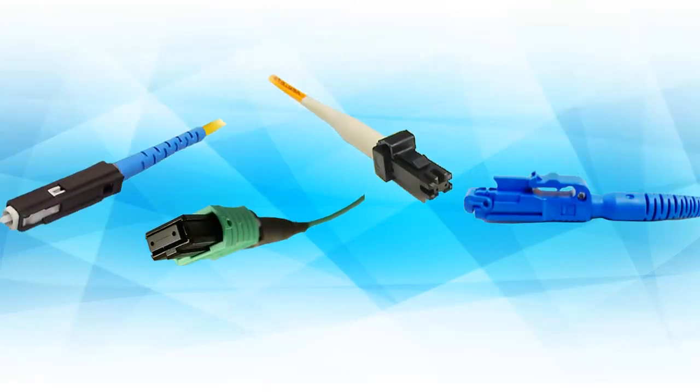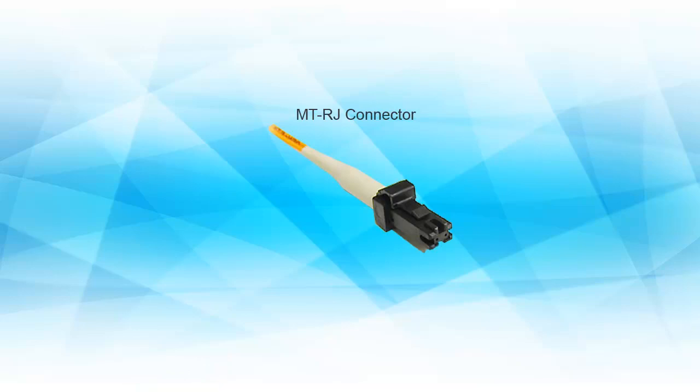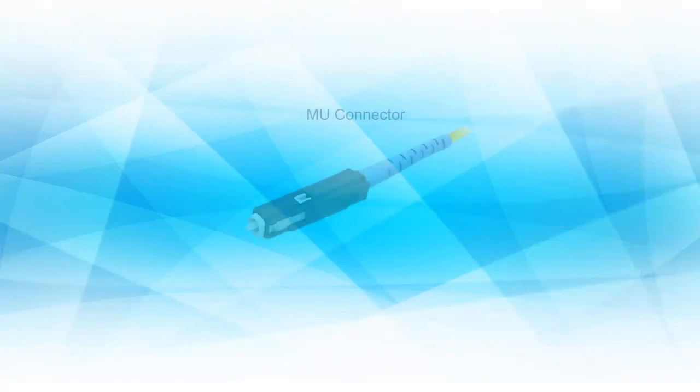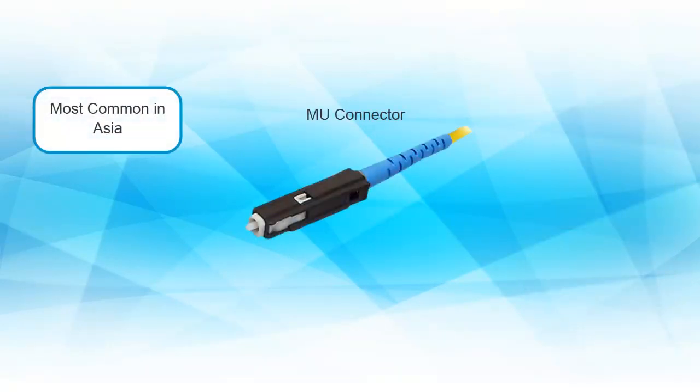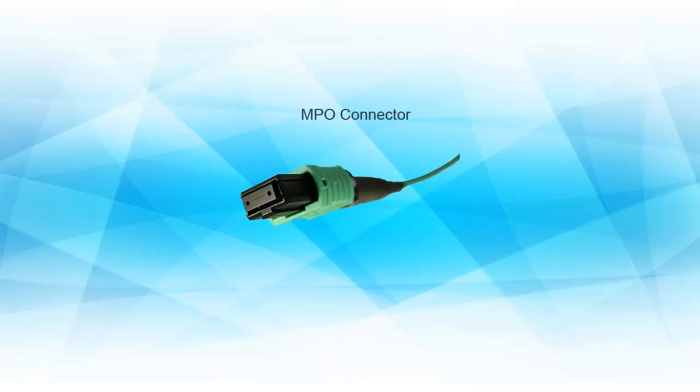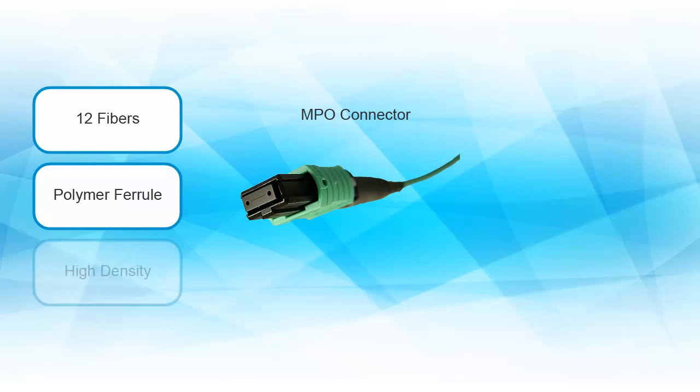You may still see other types. The MT-RJ, a duplex connector with both fibers in a polymer ferrule and pins for alignment. It has an existing base, but few new installations. The MU looks like a miniature SC with a ferrule the same size as an LC, but this connector is most commonly used in Asia. The LX-5 is like an LC connector, but with a shutter. The MPO connector is a small connector about 10 millimeters wide containing 12 fibers in a polymer ferrule and these are commonly used in data centers where high density is required.